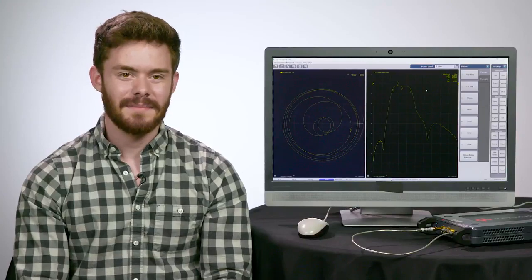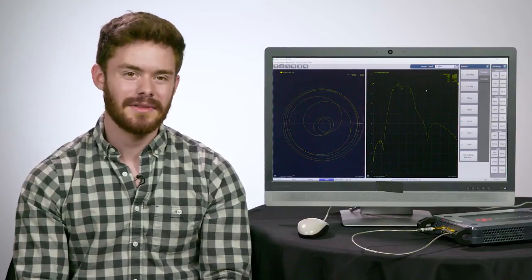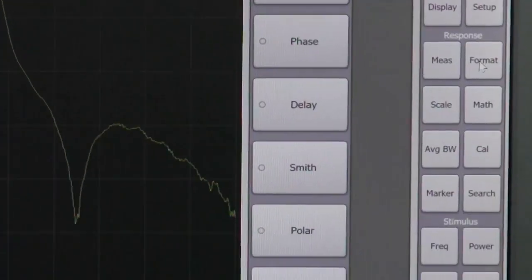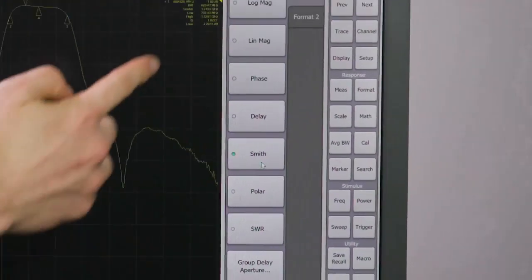You can also view these traces in different formats. Let's say I'd like to see the Smith chart for this S11 trace so that I can characterize the matching of this bandpass filter we're testing. So I'll select Format and Smith.